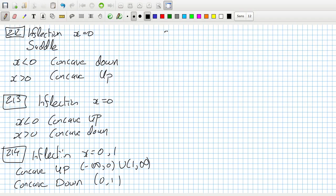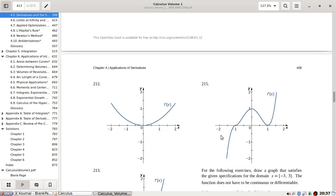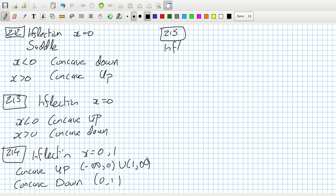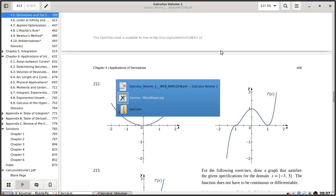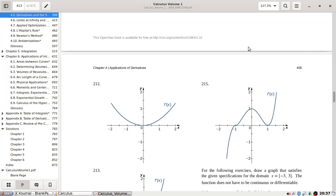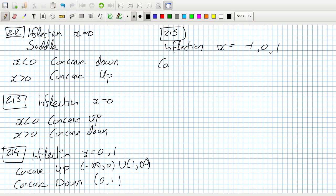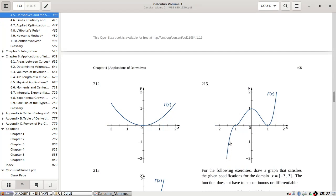And then 215 inflection at x equal minus 1, 0, 1 concave up and then concave down. Down, down, so, positive, positive means minimum,